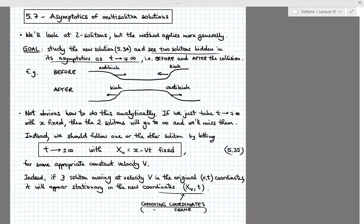That's all for today. What we'll do next time is apply this idea to the two-soliton solution 5.34 that we have just obtained, and we will see that it does indeed contain two solitons by looking at the asymptotics using the limit 5.35. I remind you that we have a problems class tomorrow. See you there.